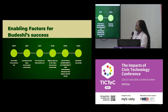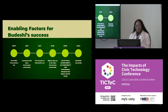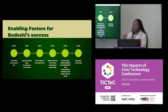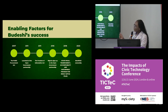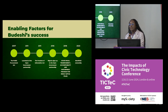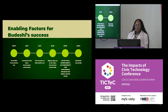Some of the enabling factors for Budeshi's success: the first was the Public Procurement Act, which mandates public procurement processes to be open, fair, and competitive. With the enactment of this act, the Bureau for Public Procurement was also established — an agency that mandates MDAs, ministries, departments, and agencies to follow the principles and guidelines the act provides.